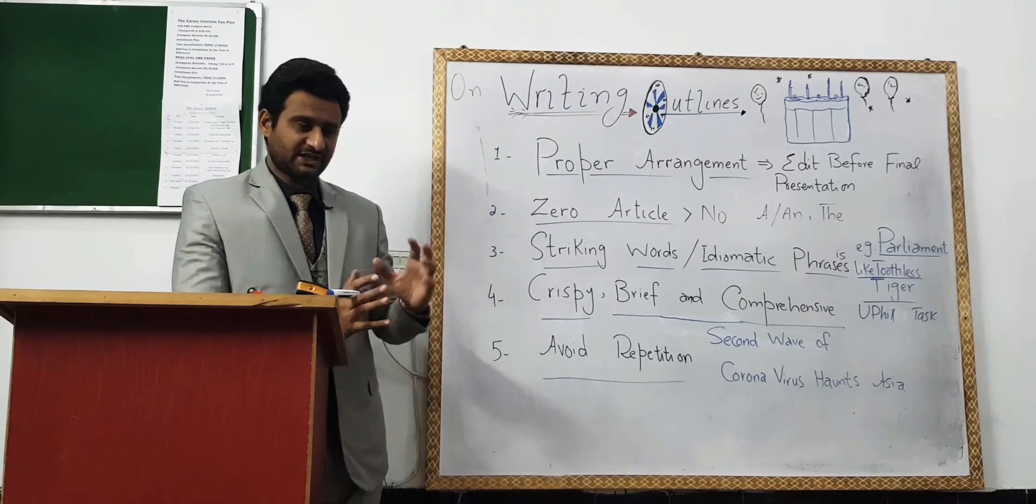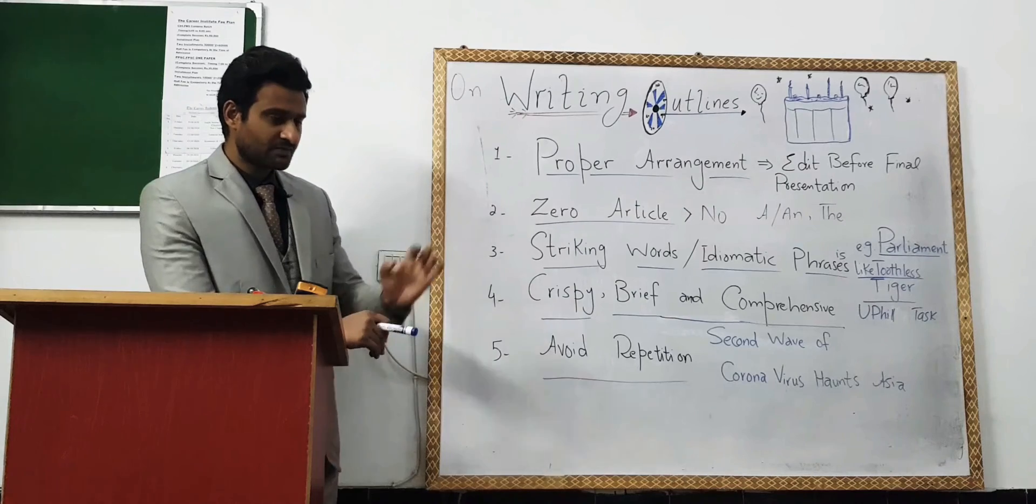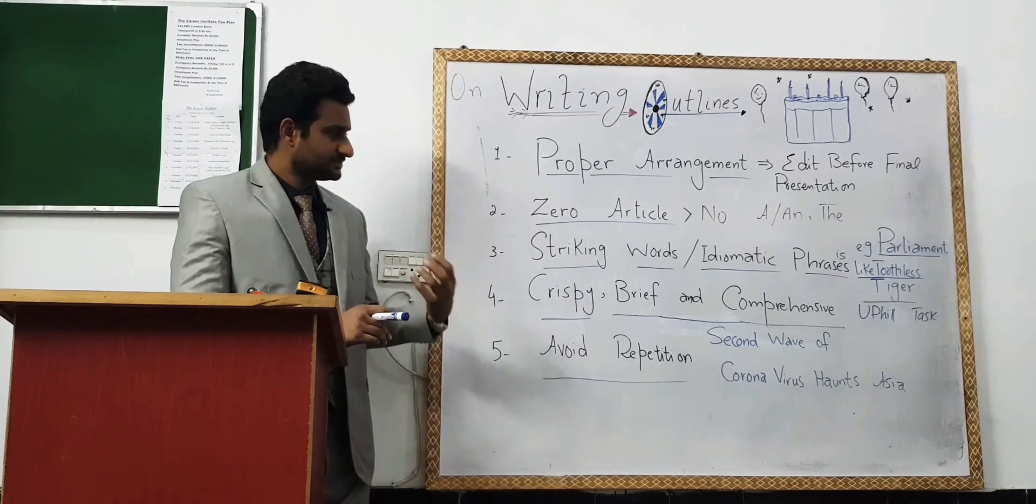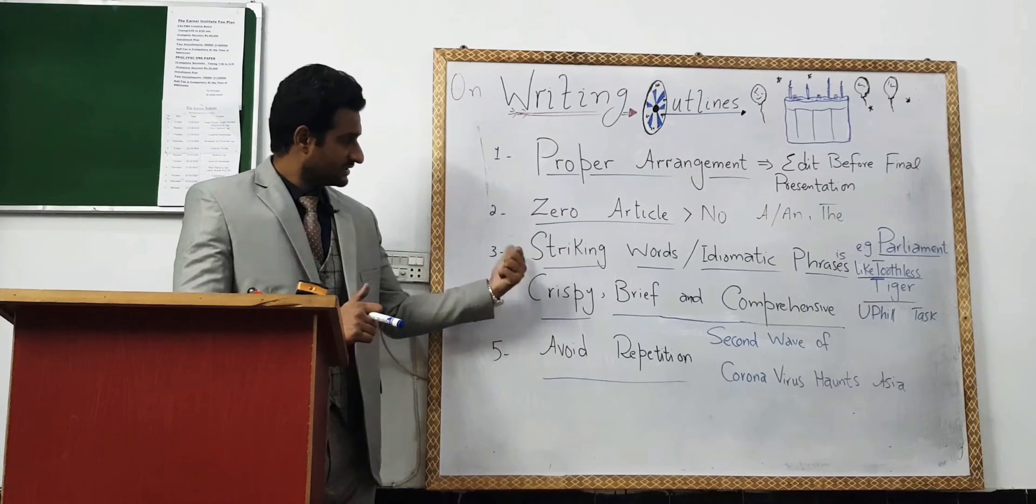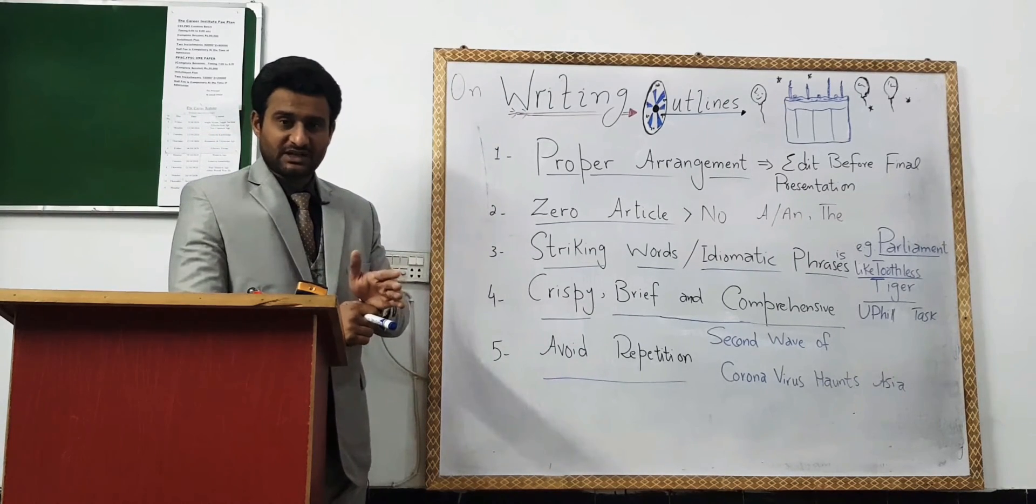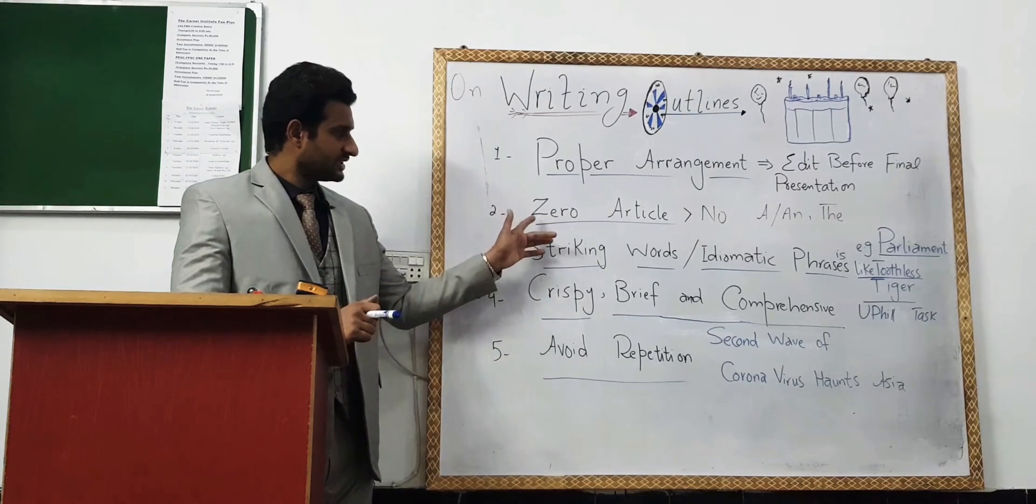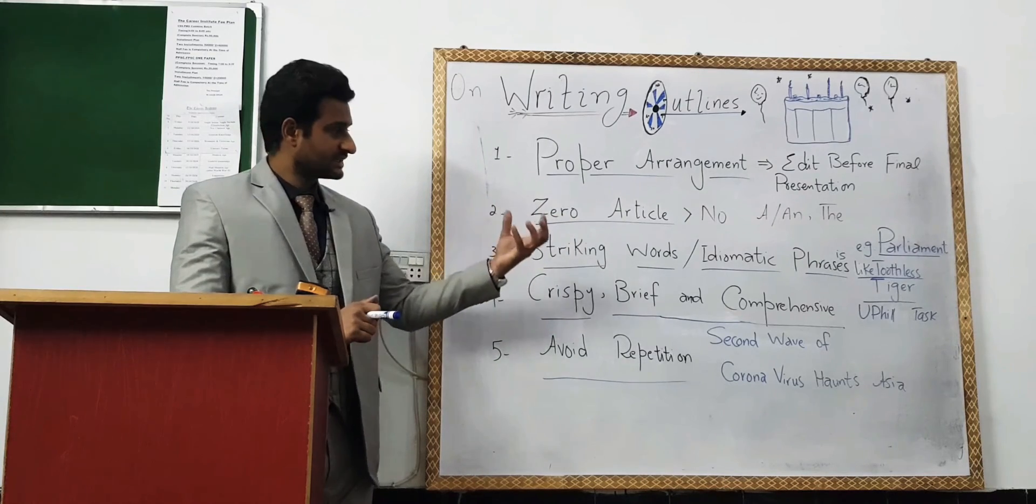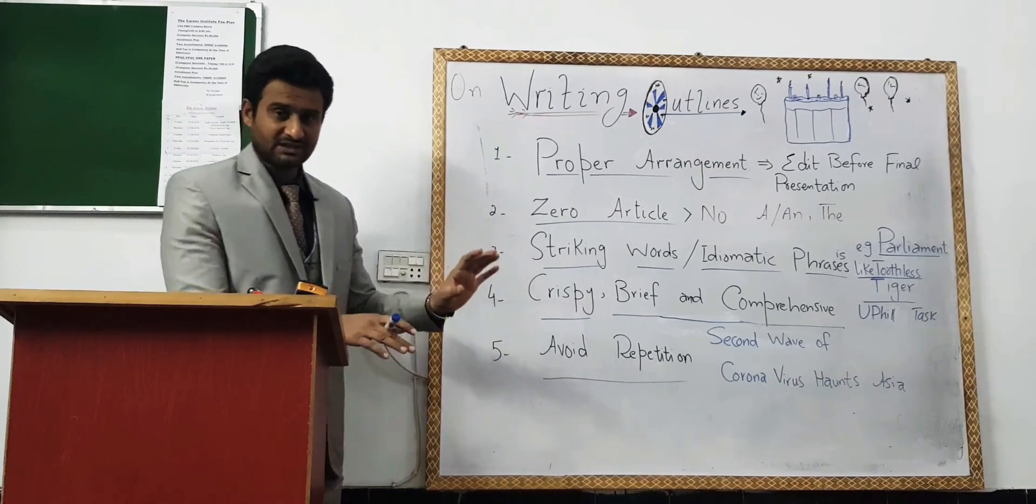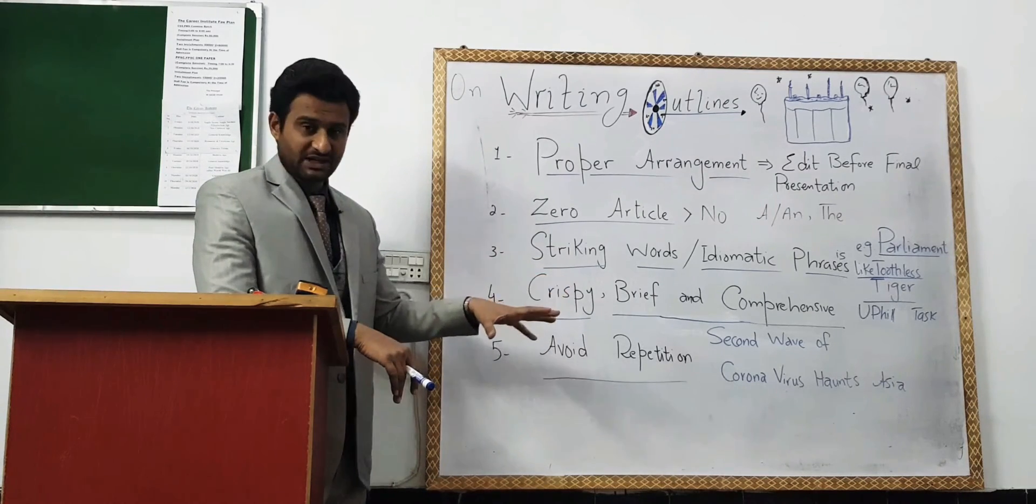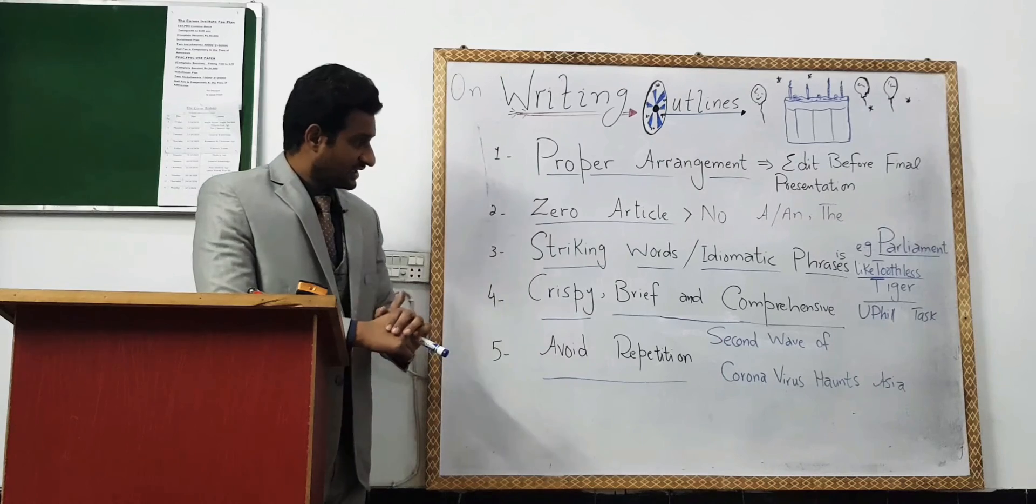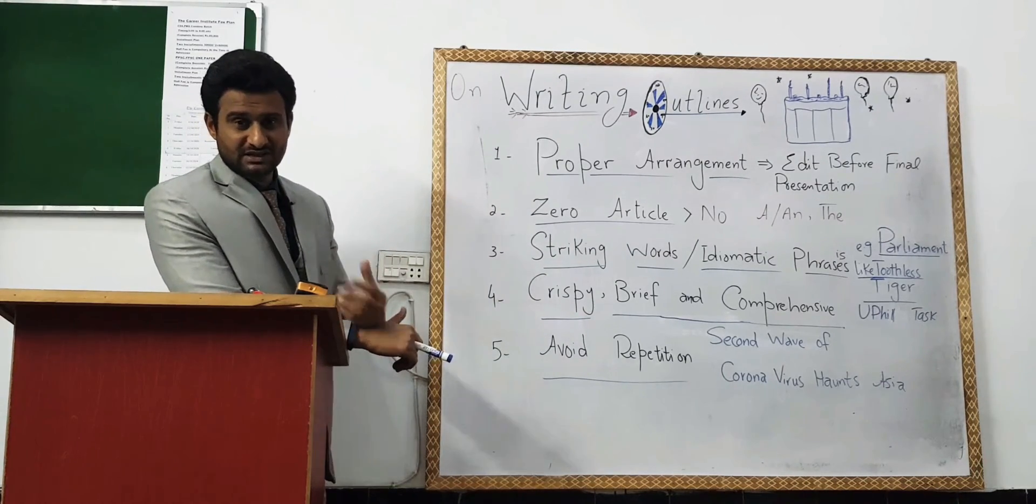Number third principle is when you write outline, your keywords are capitalized. In general, when we start the sentence, we capitalize the first letter. But when you write outline, you have to keep in mind that every word's first letter is capitalized. Like I have an example: 'Coronavirus Haunts Asia,' so it is C V H A - first letter of every word capital. In prepositional words like 'of' or 'to,' then use striking words or idiomatic phrases.